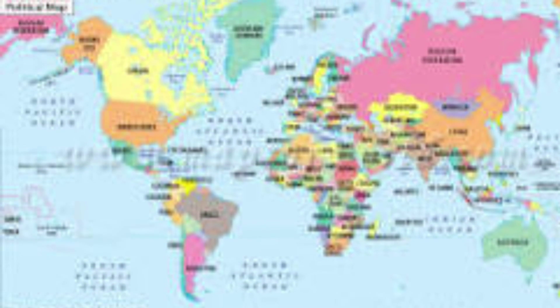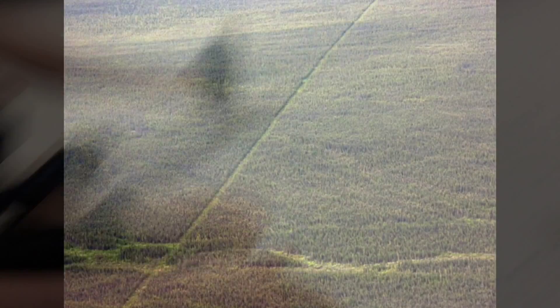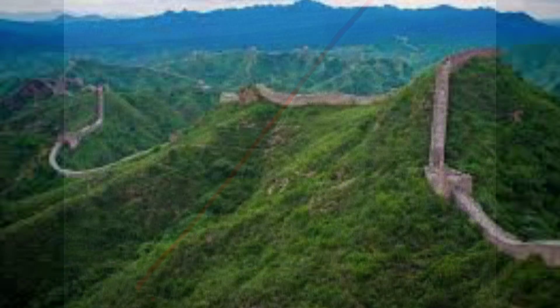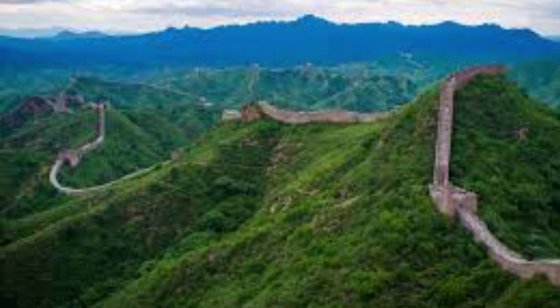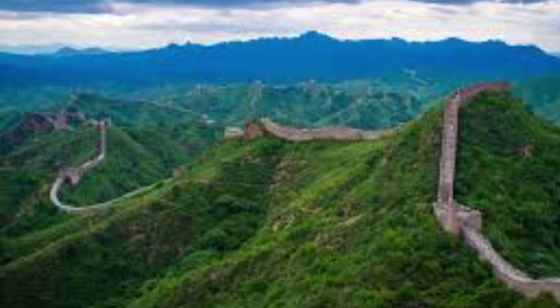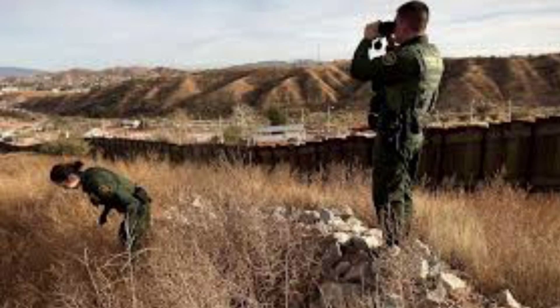Now, a little about how boundaries are created. First comes definition, which is the phase when an exact boundary is decided and agreed upon. Then comes delimitation, when the lines are drawn on maps. Next comes demarcation, when the boundary is physically marked with a fence, line, wall, etc. Not all boundaries are demarcated because it is expensive. Lastly comes administration, which is when the government enforces the boundary.